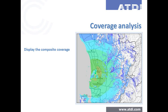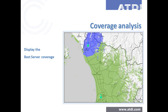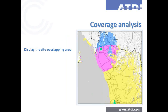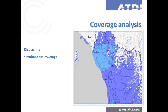In terms of outputs, ICS Telecom provides a comprehensive number of options — both visual and statistical. You can display composite coverage, best server coverage, site overlapping area, simultaneous coverage, and many other views.